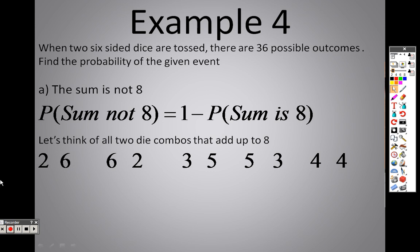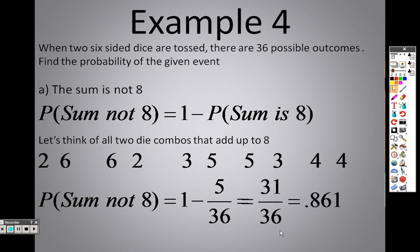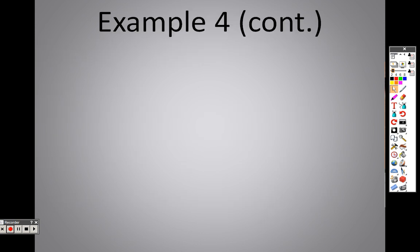You can roll a 2 and a 6 or a 6 and a 2. You can roll a 3 and a 5 or a 5 and a 3. Or you can roll a 4 and a 4, which gives me 5 out of 36 combinations. So to find how many are not, remember, the sum is 8 is 5 out of 36. To find out the opposite, I take 1 minus that, which is like saying 36 minus 5. So if I just do 36 minus 5, I end up with 31 over 36, which is 86.1%.